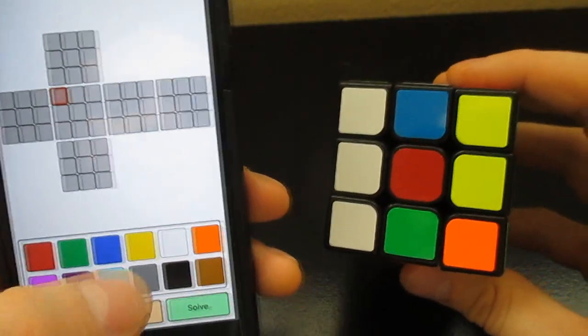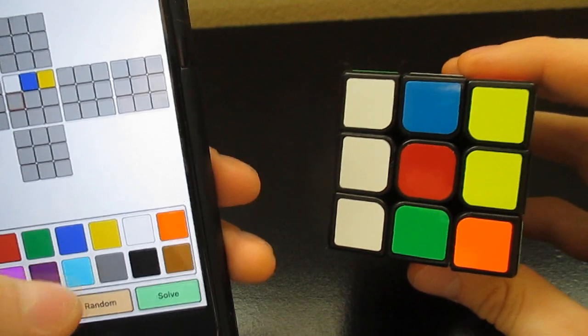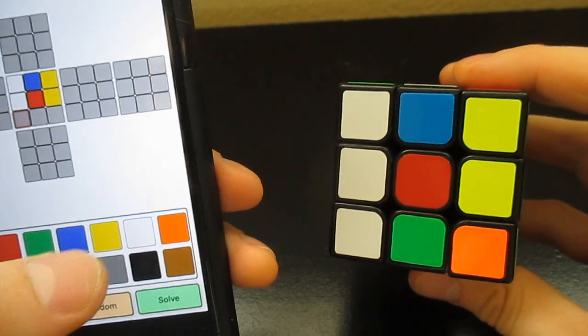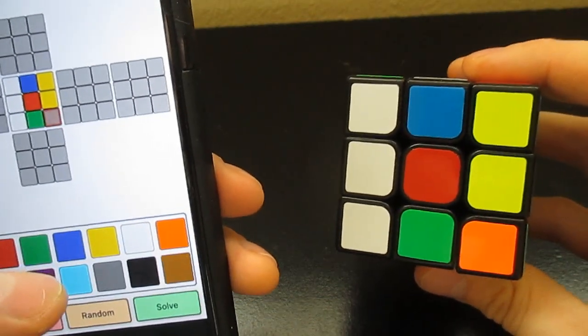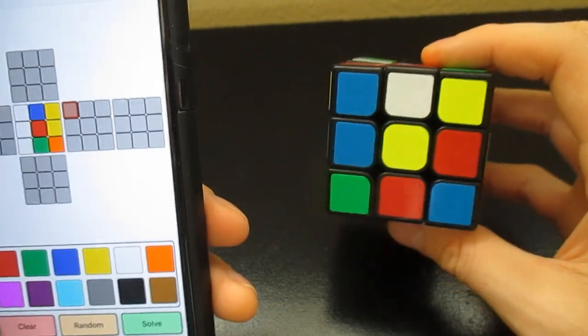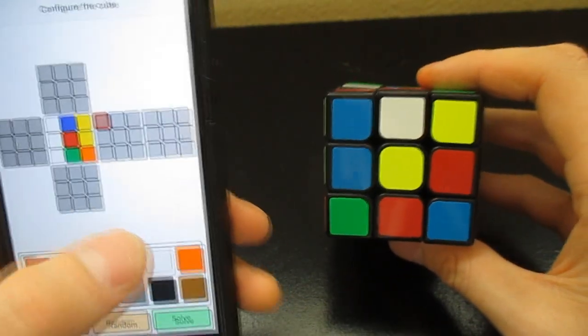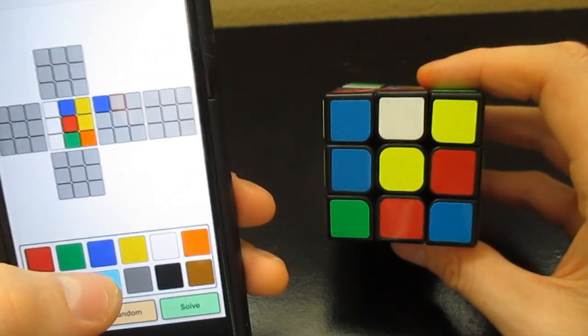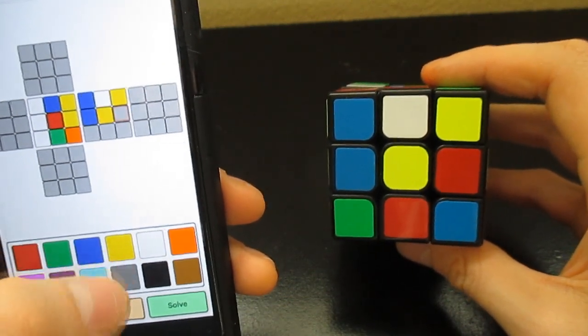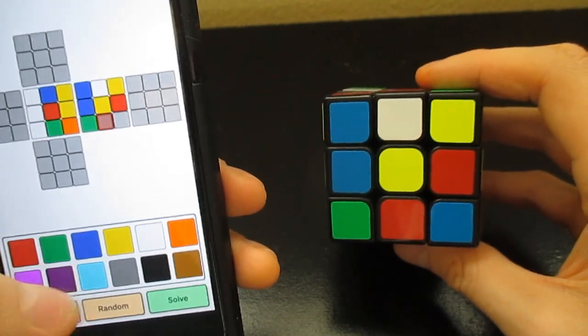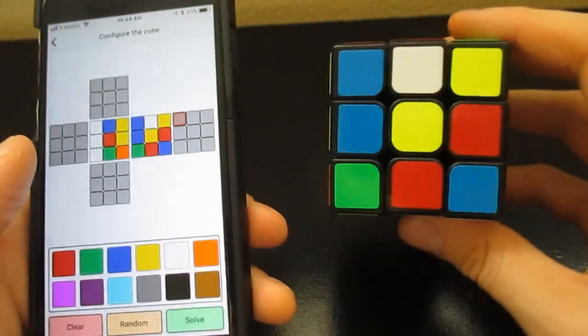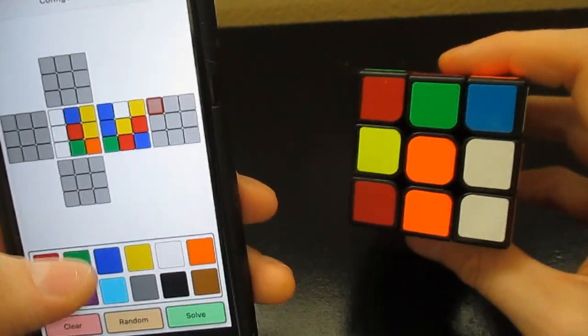So basically what it's saying is you have to input colors. You have to manually put it. I'm going to put white, blue, yellow, white, red, yellow, white, green, orange. Now go to the next side. So just turn the cube and go to the next side. So blue, white, yellow, blue, yellow, red, green, red, blue. As you can see, it matches exactly how I'm putting.